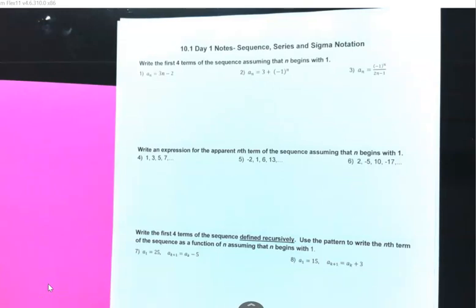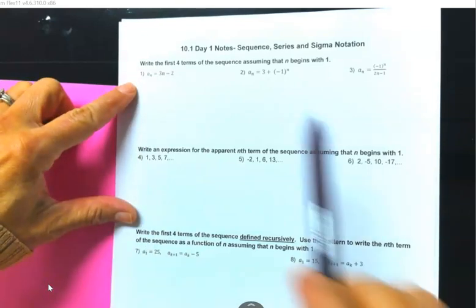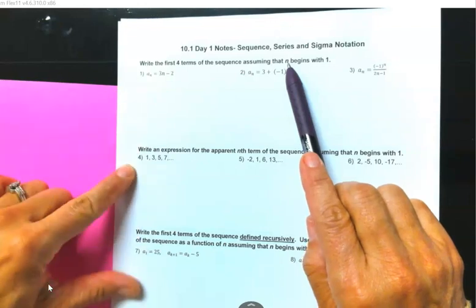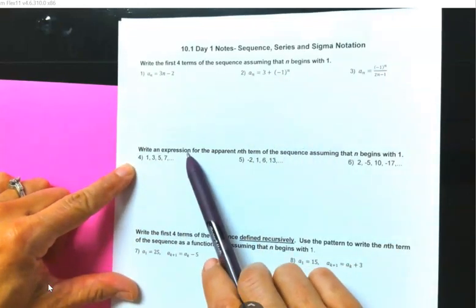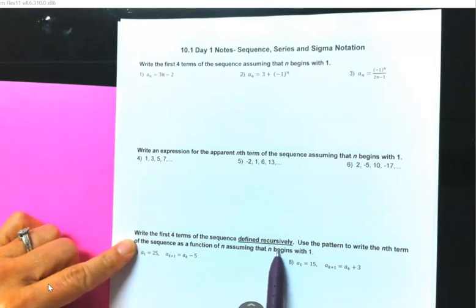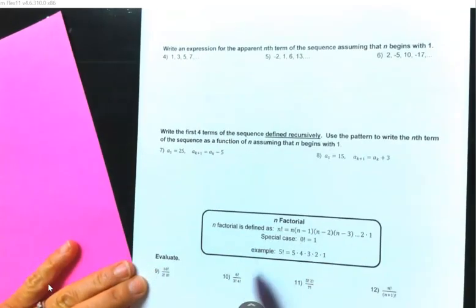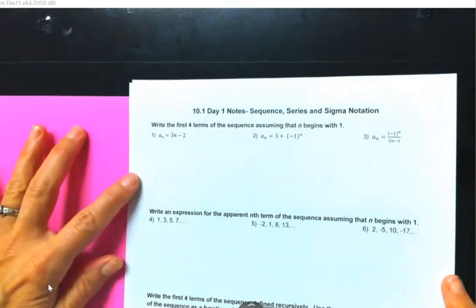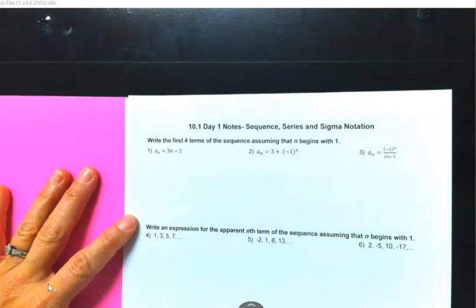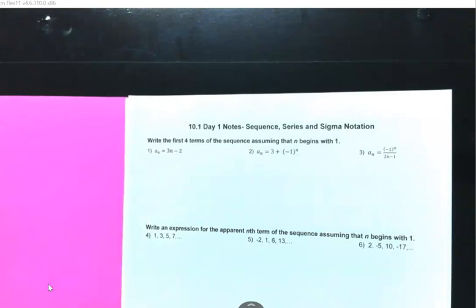10.1, day one. Notes on sequences, series, and segmentation. We are going to write the first four terms and assume N begins with one. Then we're going to write an expression, define it recursively, and go over a little factorial. So those are our four parts. Let's go ahead and start with part one, which is going to be the first four terms in a sequence.